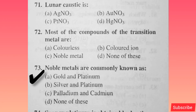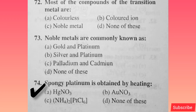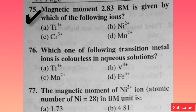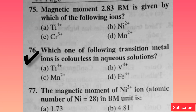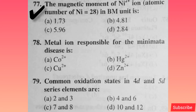Noble elements commonly known as gold and platinum — option A is correct. Spongy platinum is obtained by heating — option C is correct. Magnetic moment 2.83 BM is given by which of the following ion? Option B is correct. Which of the following transition metal ion is colorless in aqueous solution? Option A is correct. The magnetic moment of Ni2+ ion (atomic number of Ni is 28) in BM units is — option D is correct.